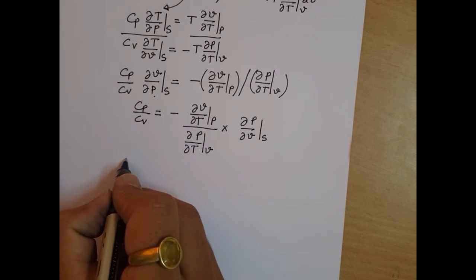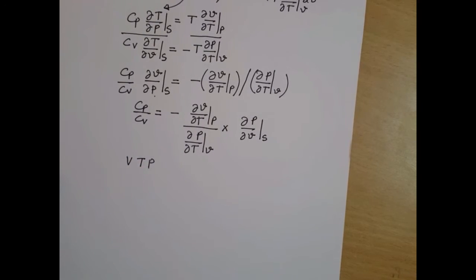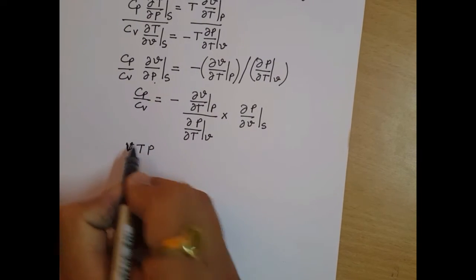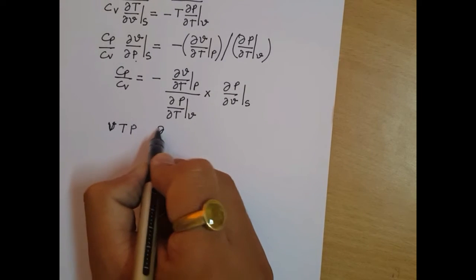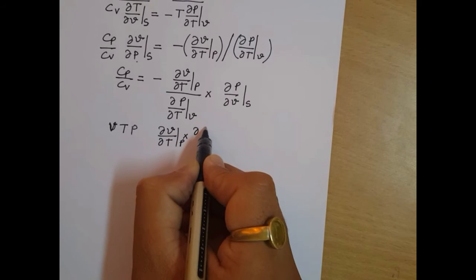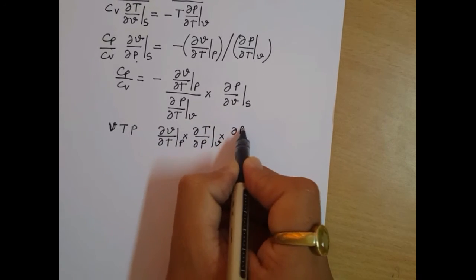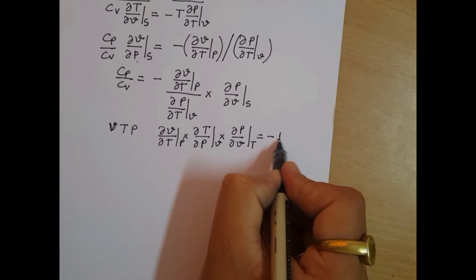Now, if volume, temperature, and pressure are connected, then using the cyclic identity: del V by del T keeping pressure constant, times del T by del P keeping volume constant, times del P by del V keeping temperature constant, equals minus 1.